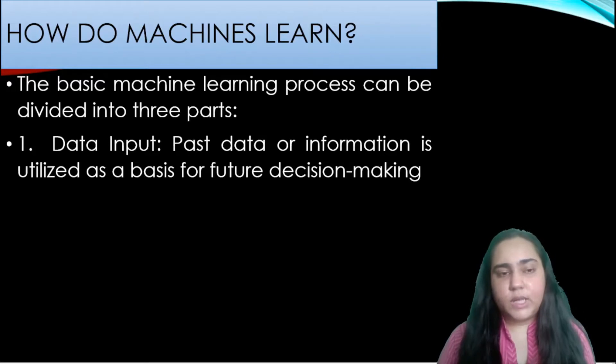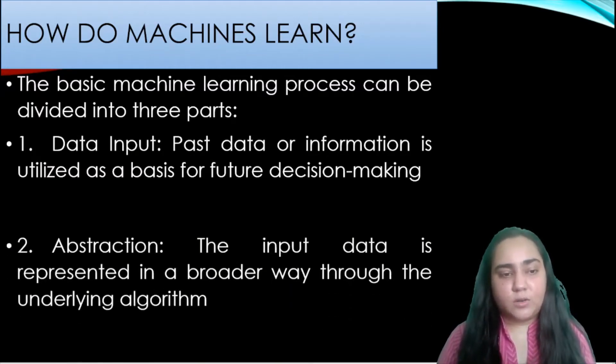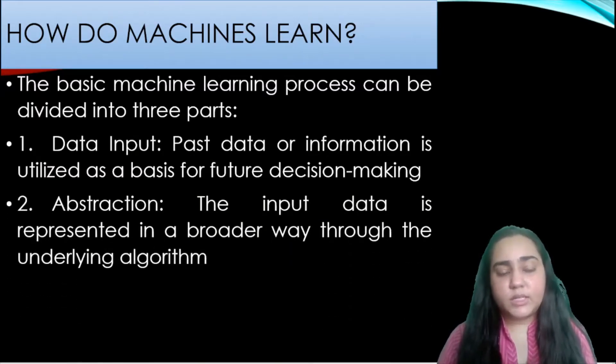This is the basic machine learning process divided into three parts: data, abstraction and generalization. The first thing is data input which means past data or information that can be utilized for future decision making. So this is like if you want to predict sales profit for your company in the next year then you might want to give as an input to your computer program sales data from all the previous years. That would be data input.